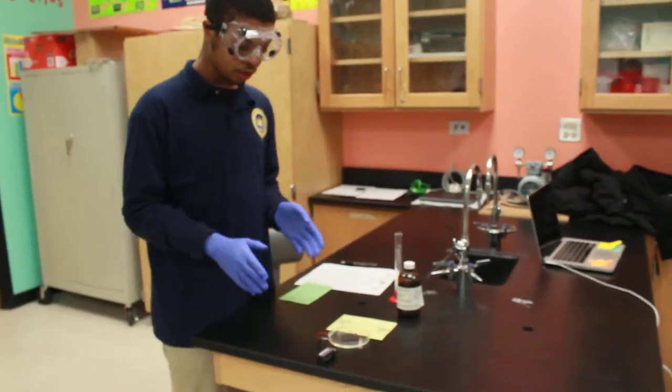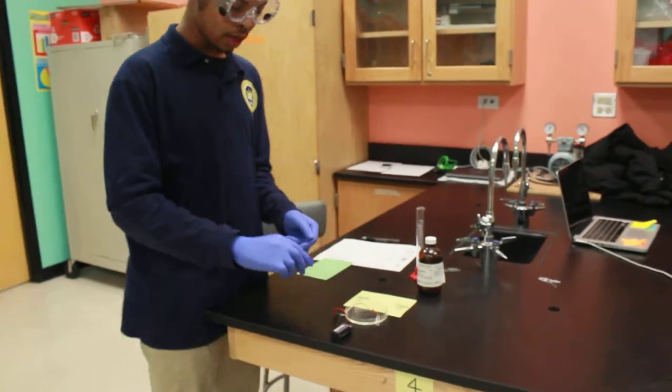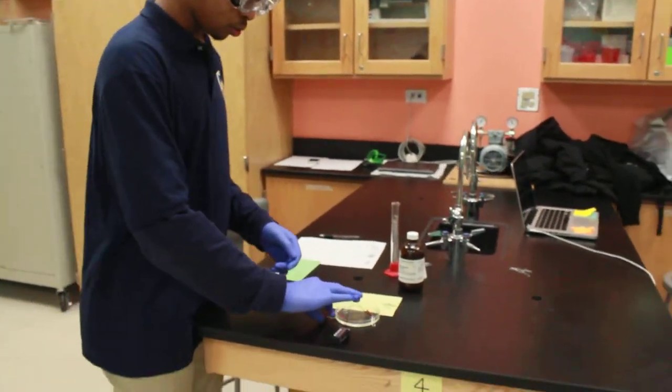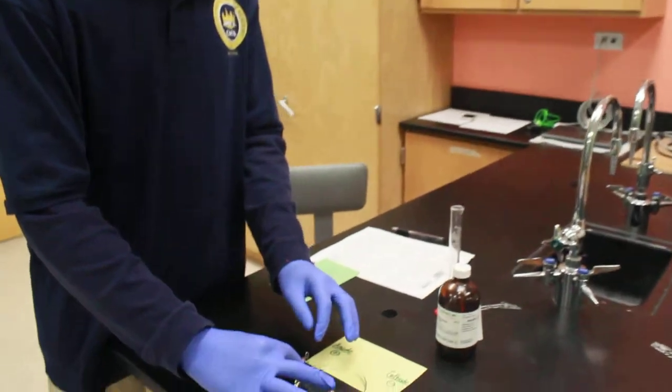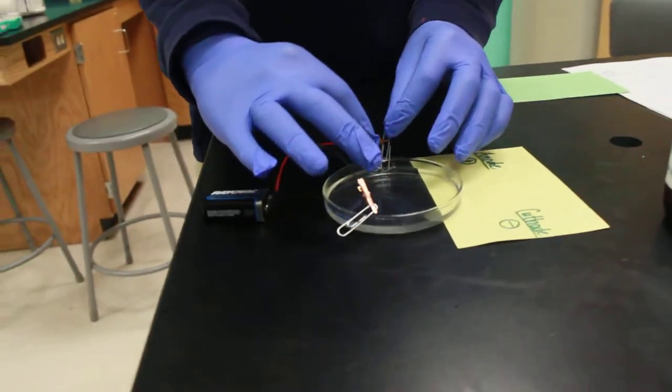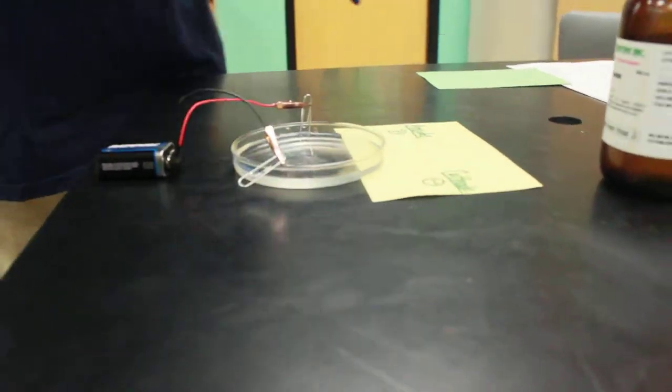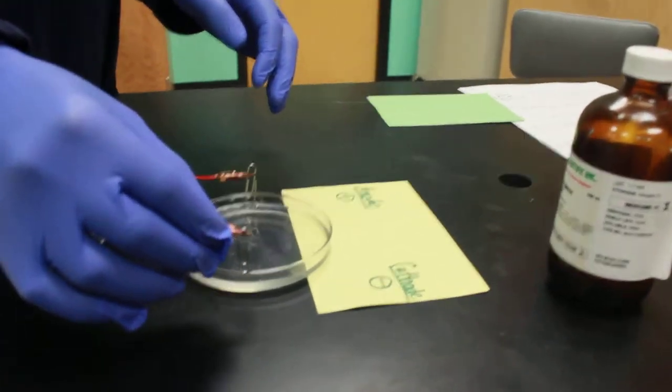First of all, we need to know that we're going to take the anode, which is the positive end of the clip, and put it onto one end of the petri dish.